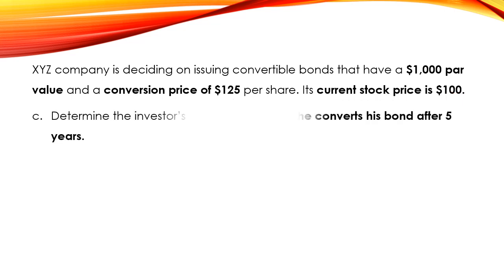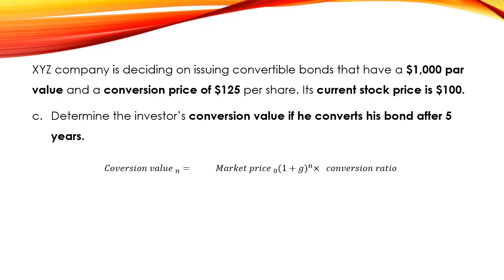Finally, in Question C, we need to determine the investor's conversion value if he converts his bond after five years. The conversion value at period n equals the market price at period zero times (1 + g) to the power n — or simply the market price at period n, already calculated — times the conversion ratio. In this case, that is $161.05 times the conversion ratio of 8.